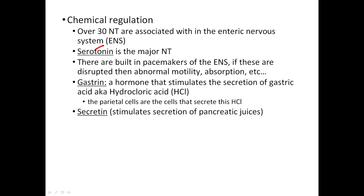Gastrin is a hormone that stimulates the release of hydrochloric acid from the stomach. This is very important because it helps you break down proteins and kill microorganisms — it's an acid and part of your defense. Specifically, the parietal cells are the cells that release hydrochloric acid in your stomach, and gastrin is the hormone that tells them to do that.